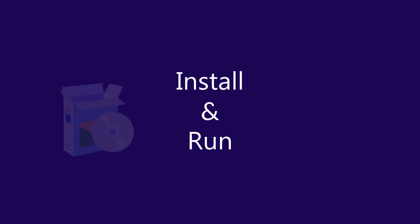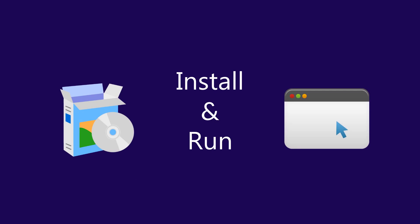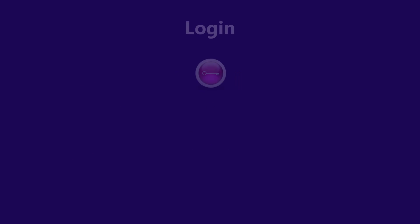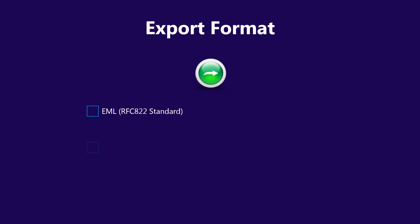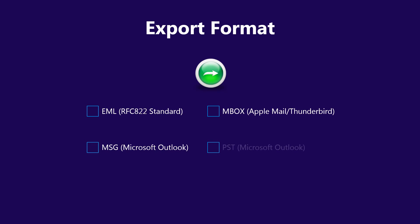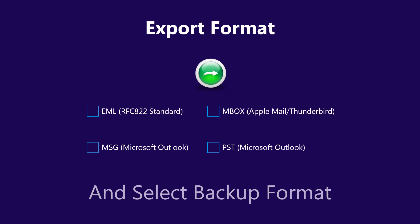First, you need to install and run the Yahoo Backup Software. For backup options, you need to log in to your Yahoo account with your username and password in the Yahoo Backup Software. Yahoo Backup Software provides multiple backup formats: EML, MSG, MBOX, and PST formats.